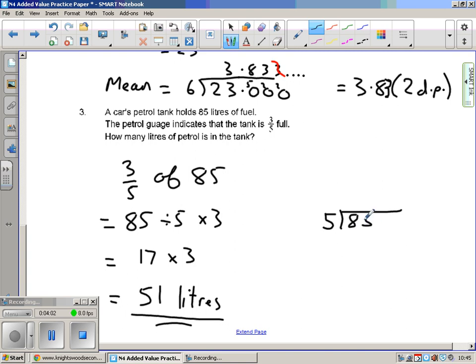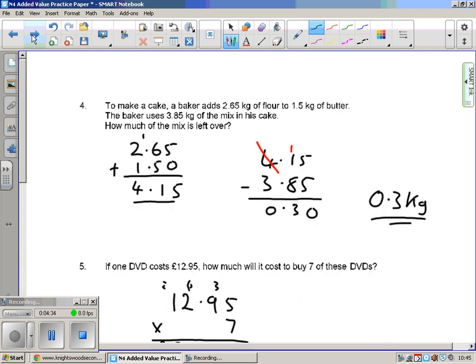Five into 85: five goes into eight one time remainder three, five into 35 equals seven times. Then we have to do 17 multiplied by three. Don't do it in your head - why take the risk of messing it up and losing a mark? 17 threes: seven threes are 21, carry the two. One three is three, plus the two, that's five. Fifty one. Always show your working out.